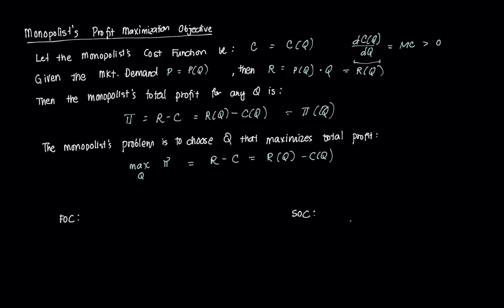Since this is a profit maximization problem, our first-order condition (FOC) is that the derivative of profit with respect to Q is equal to zero, which implies that marginal profit equals zero — meaning any additional quantity will not incur an additional profit, so that's the last quantity the monopolist would choose to produce. The second-order condition (SOC) requires that the second derivative of profit with respect to Q be negative to ensure a maximum.